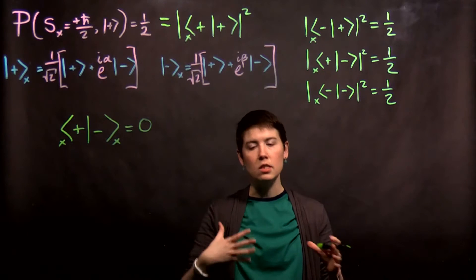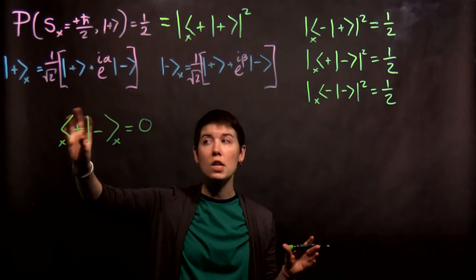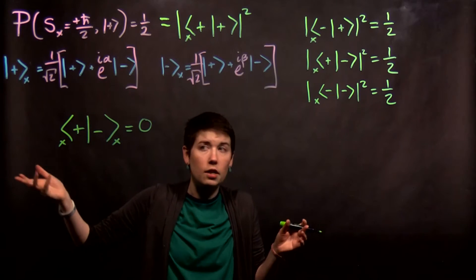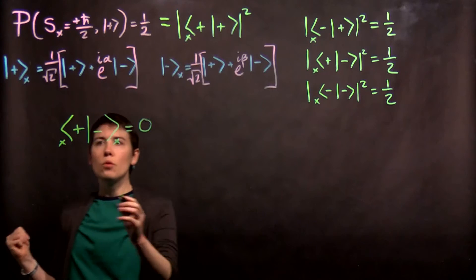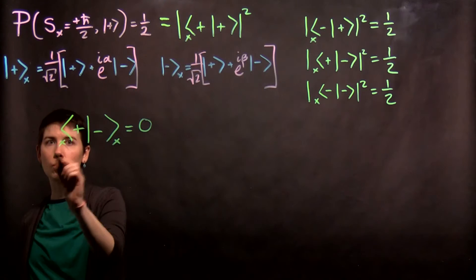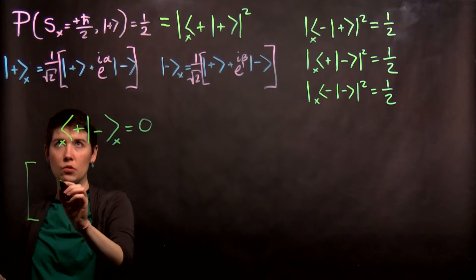This is that idea that there's 0 overlap, that if we started with a state that was spin down in x, we would not later find it to be spin up in x, that these are different states. So when we go to use this, we're going to have our inner product on the left, again being the complex conjugate of this.